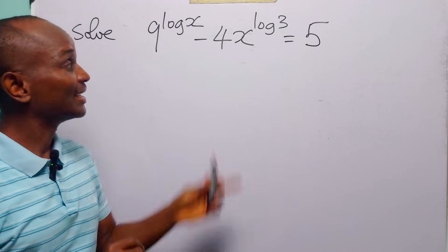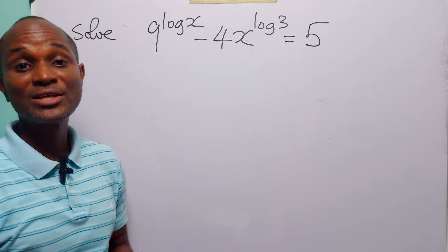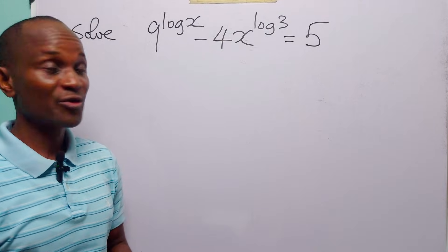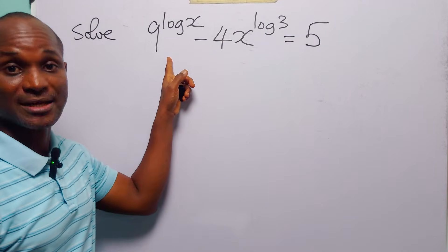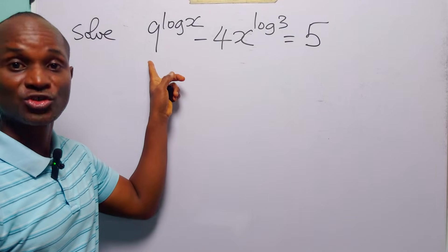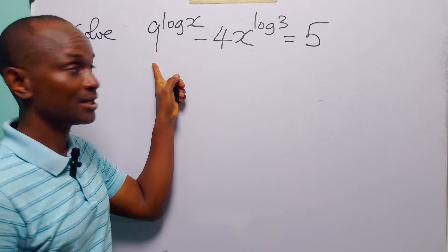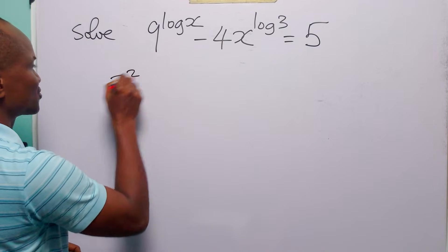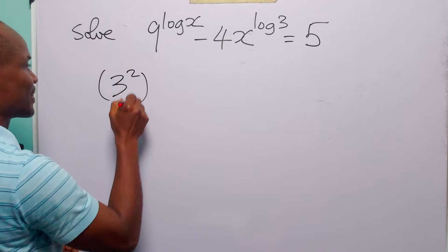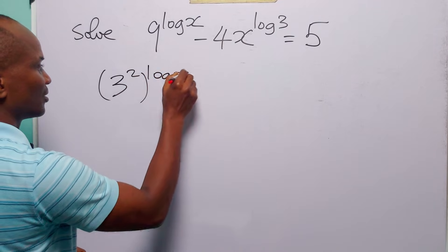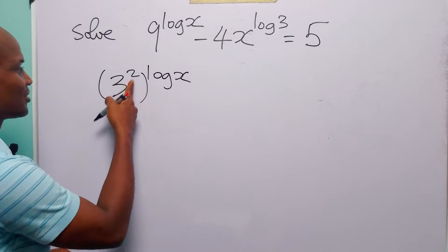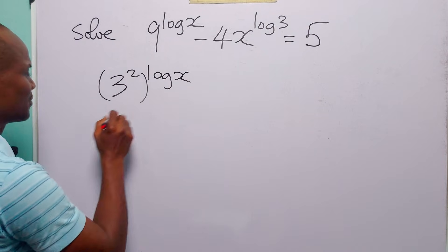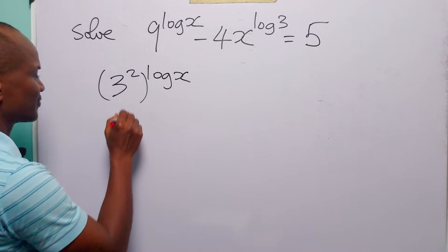Hello and welcome. There are several ways of simplifying this logarithmic equation. For instance, you can start with the first term. You know that 9 is 3 squared, so we can write this as 3 squared to the power log x. Now let us switch the places of these two powers.